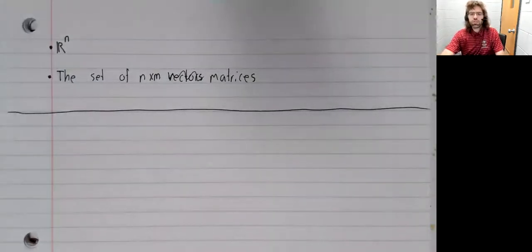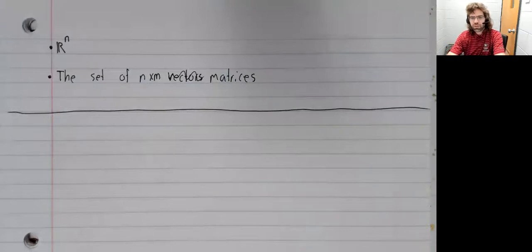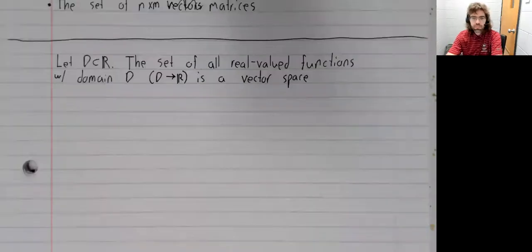What are some other vector spaces? Let D be a subset of R.